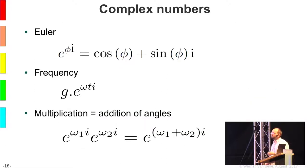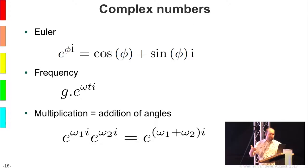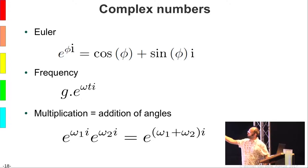Everything in this presentation is in the complex domain — we don't talk about real numbers. A key relation is Euler's formula: e to the power of phi times i is a point on the unit circle at angle phi, written as cos(phi) + i·sin(phi). With this, you can easily express a frequency: fill in omega for rotations per second, and as t increases, omega·t increases, while g specifies the amplitude. This is essentially easier than writing a sine or cosine.